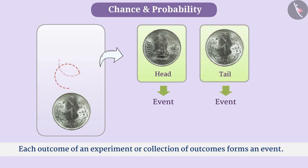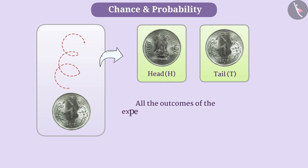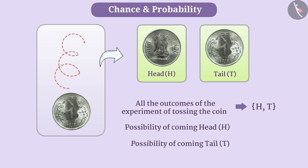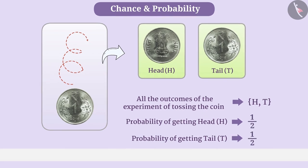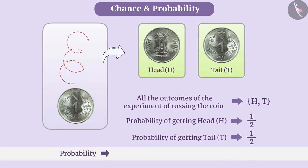When a coin is tossed, the outcome can be either a head or a tail. We will represent head with H and tail with T. In this way, all the outcomes of the experiment of tossing the coin are H and T. The possibility of getting each of these is 1 out of 2, that is 1 by 2. We say that the probability of getting head is 1 by 2 and the probability of getting a tail is 1 by 2. In this way, probability tells us the possibility of happening of any event and helps in measuring that possibility.